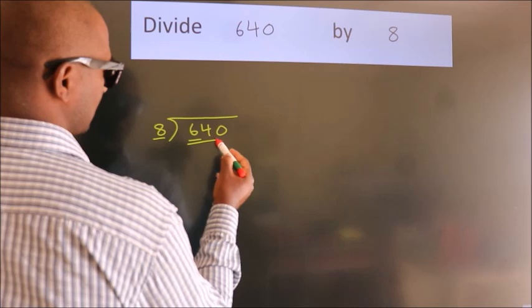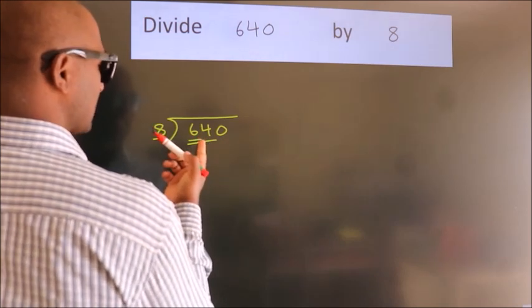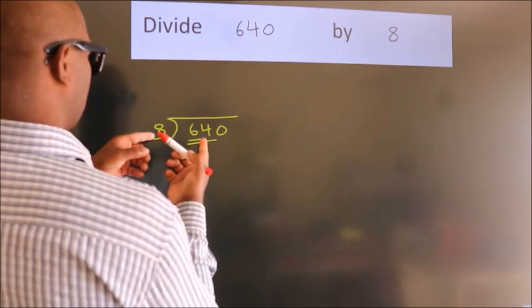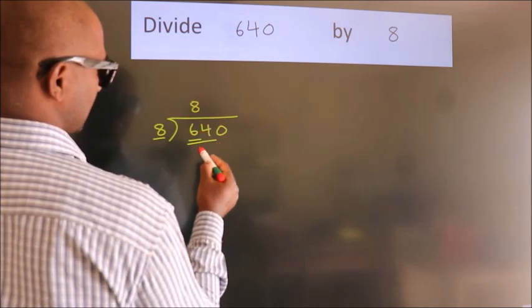should take two numbers: 64. When do we get 64 in the eight times table? Eight eights are 64.